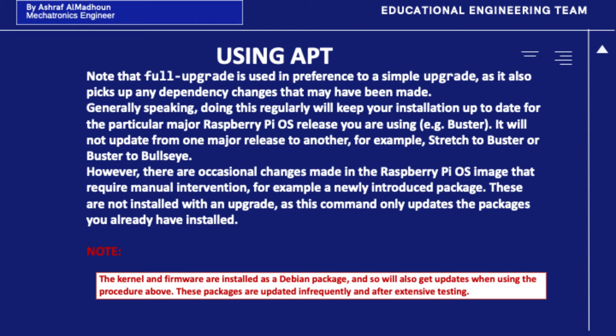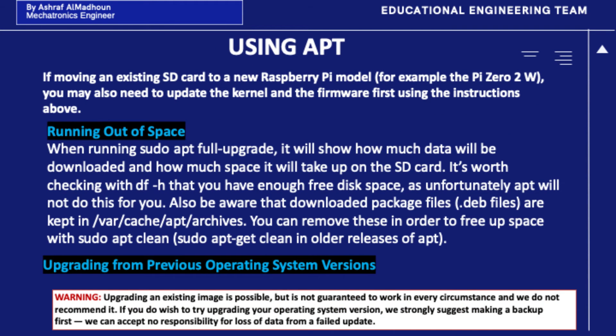These are not installed with an upgrade, as this command only updates the packages you have already installed. Note that the kernel and firmware are installed as Debian packages and so will also get updates when using the procedure above. These packages are updated infrequently and after extensive testing. If moving an existing SD card to a new Raspberry Pi model, for example the Pi 02W, you may also need to update the kernel and the firmware first using the instructions above.